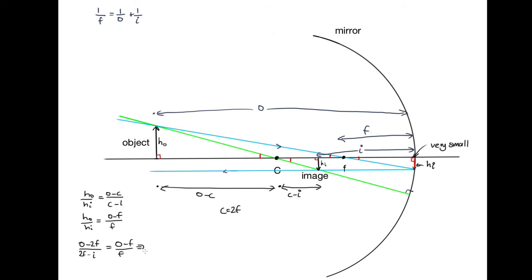So we've got O minus 2F over 2F minus I is equal to O minus F over F. And now we've got a fair amount of algebra to do. So let's cross multiply. So we've got O F minus 2F squared is equal to,